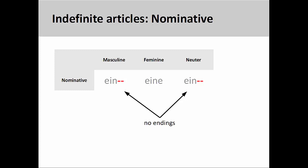The nominative indefinite articles are 'ein' (masculine), 'eine' (feminine), and 'ein' (neuter). The masculine and neuter indefinite articles, unlike the definite articles, do not take an ending. This sometimes makes it difficult to determine the gender of the noun they modify.